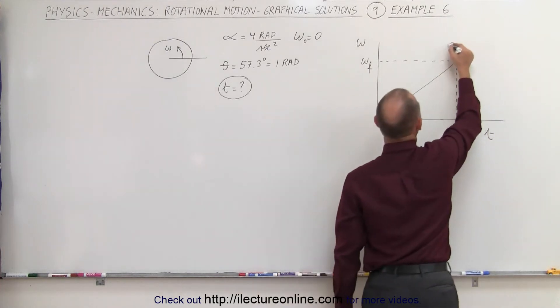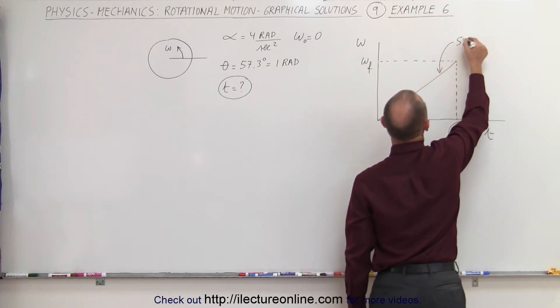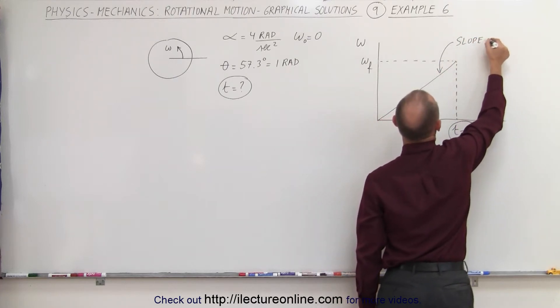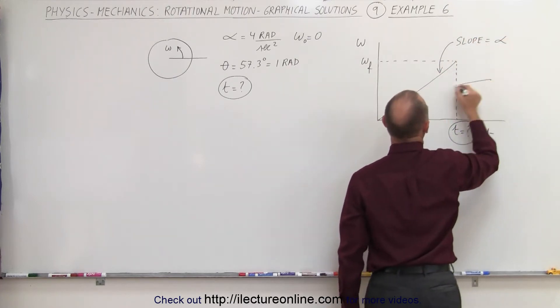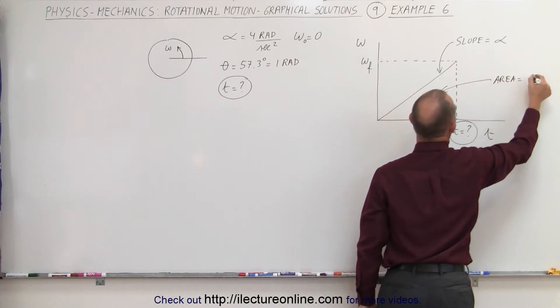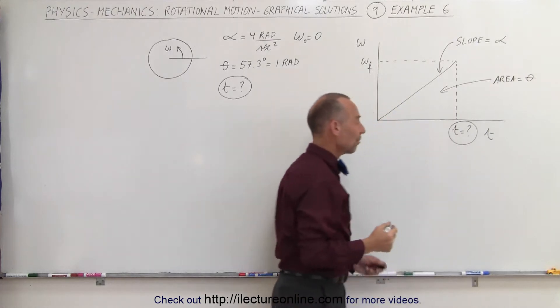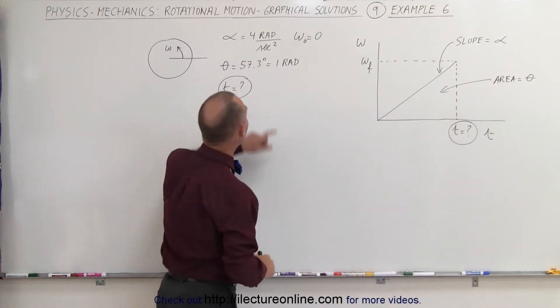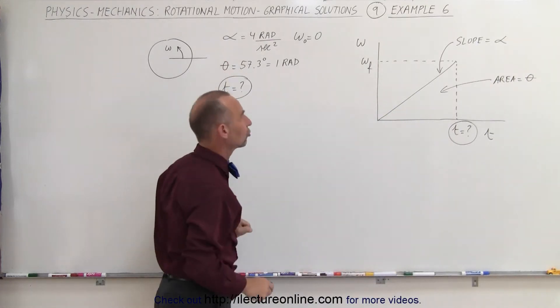Well, we know two things. We know that the slope represents the angle acceleration, and we know that the area underneath the graph represents the angle of distance traveled, and we know both of those. We know the angle acceleration, and we know the distance traveled.